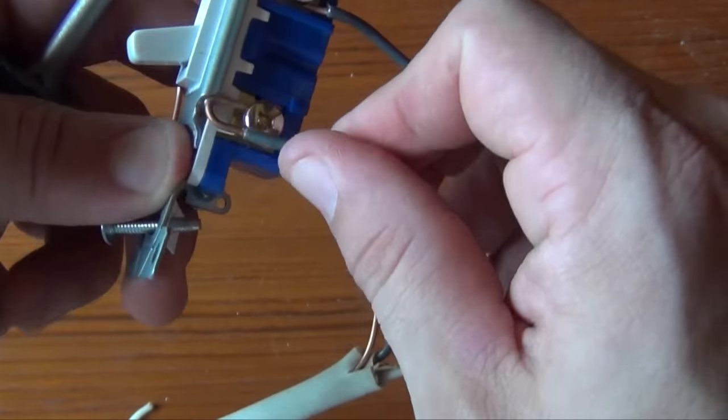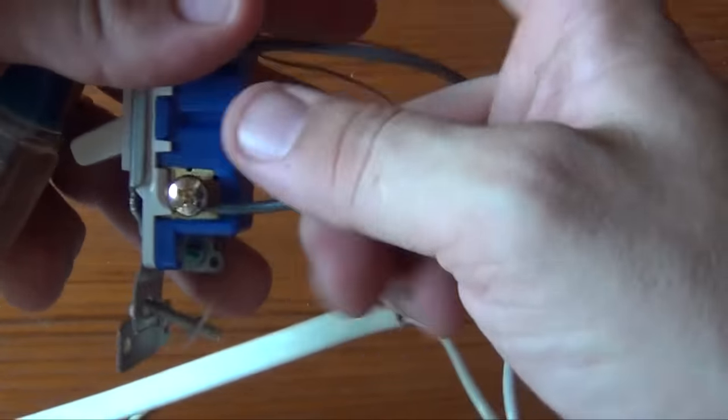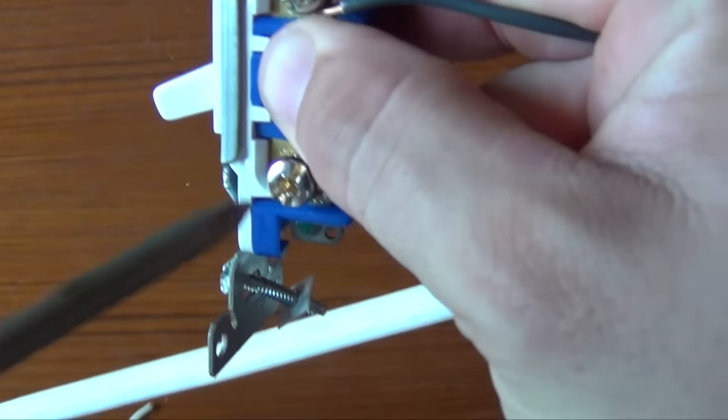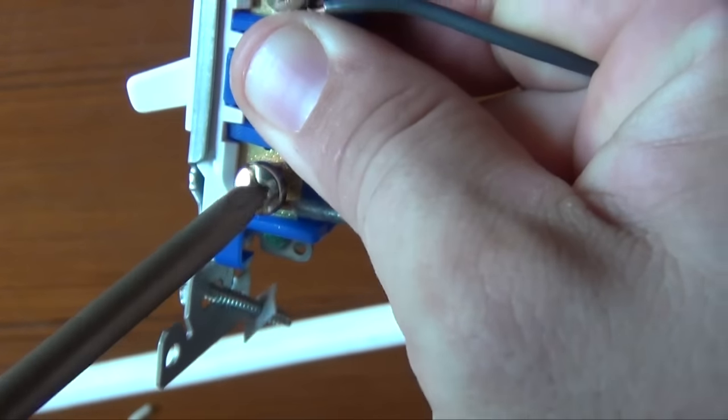Connect your second black wire around in a clockwise manner and tighten the screw down on that wire as well. Make sure you have a tight connection when you're finished.